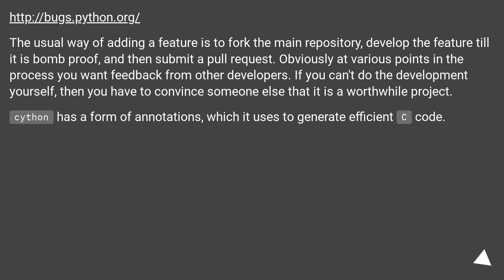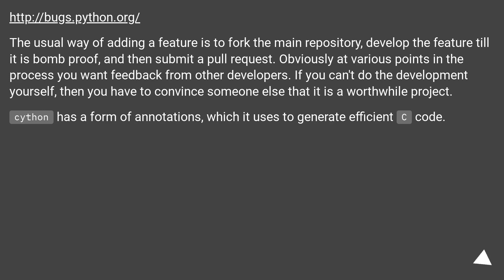The usual way of adding a feature is to fork the main repository, develop the feature till it is bombproof, and then submit a pull request. Obviously at various points in the process you want feedback from other developers. If you can't do the development yourself, then you have to convince someone else that it is a worthwhile project.